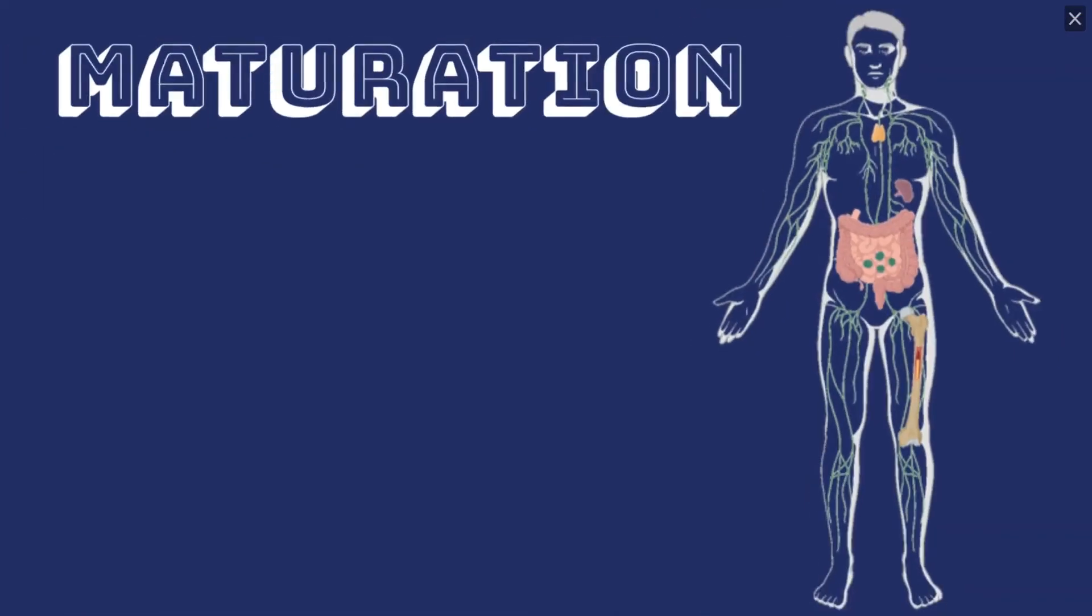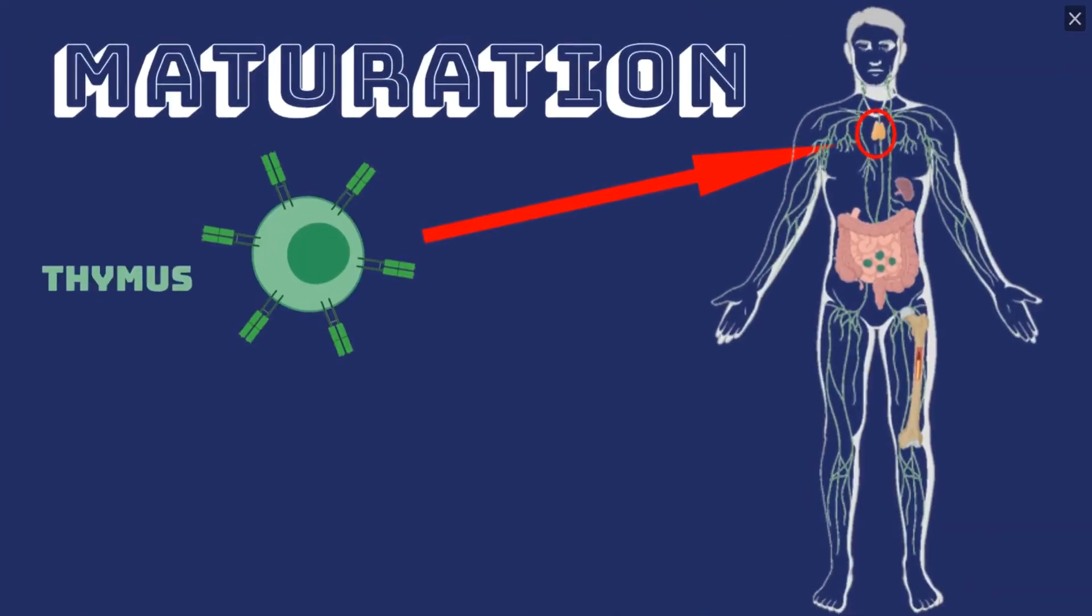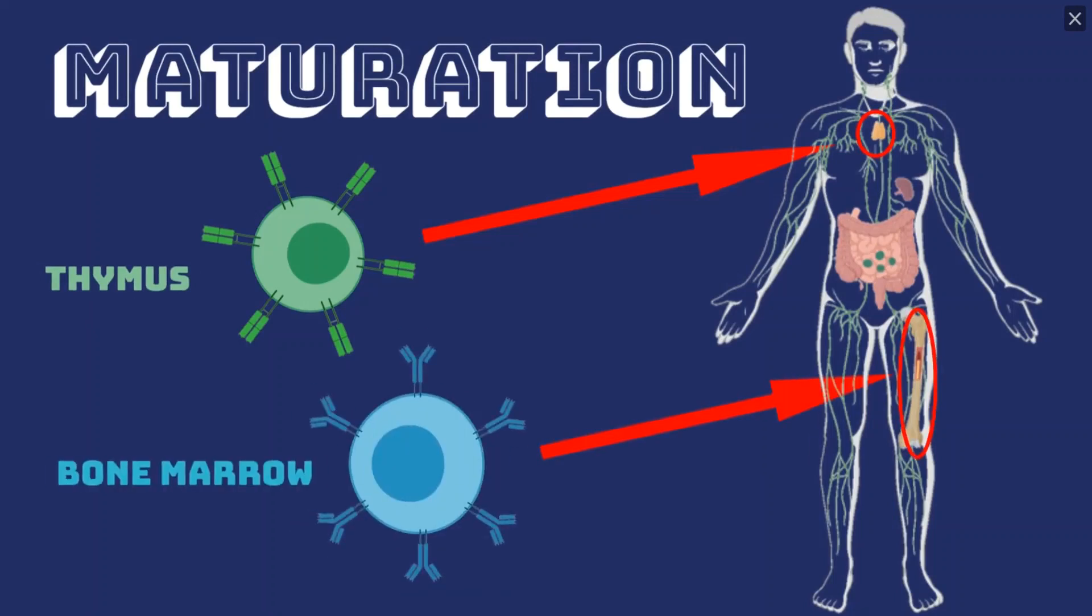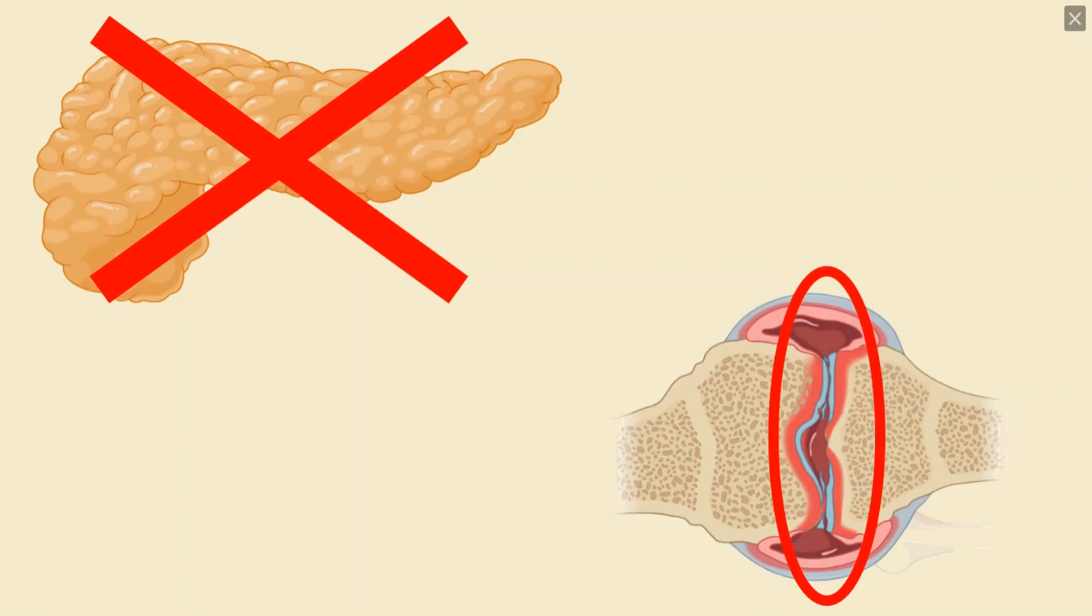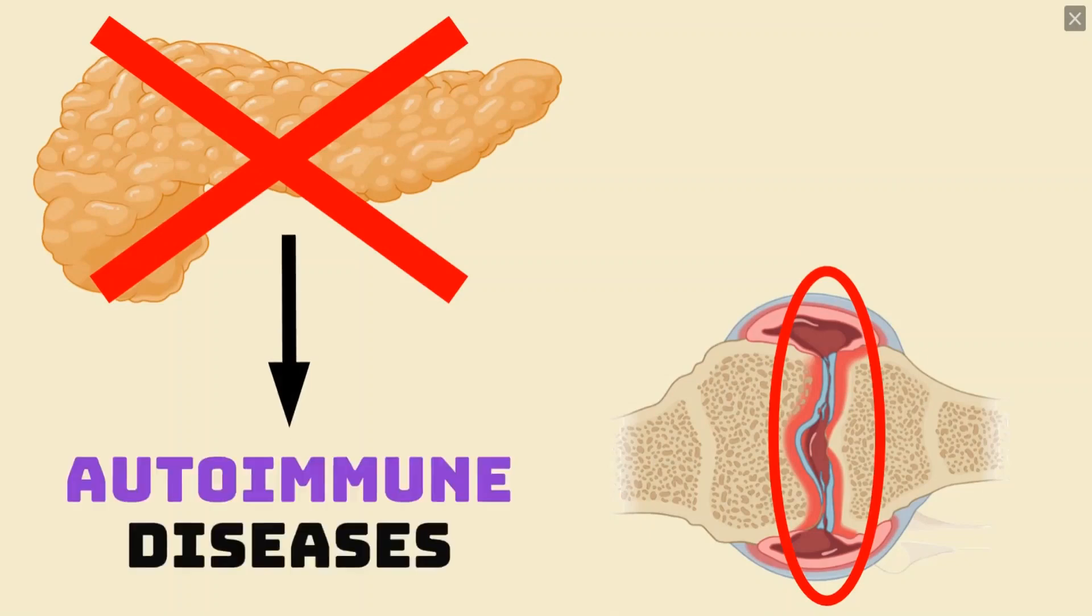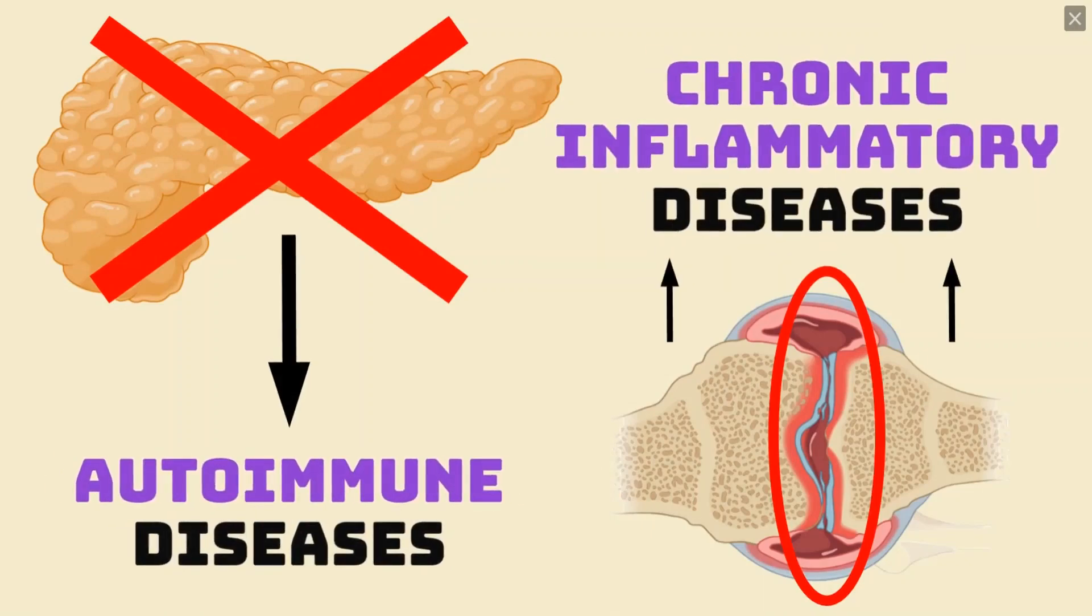However, all T cells undergo a maturation process in the thymus, and B cells undergo a similar process in the bone marrow, which weeds out most of these autoreactive cells. Failure in this process can result in the damage and destruction of parts of our own body, leading to a variety of either autoimmune or chronic inflammatory diseases like type 1 diabetes and rheumatoid arthritis.